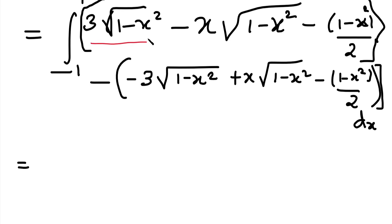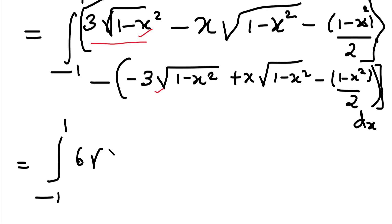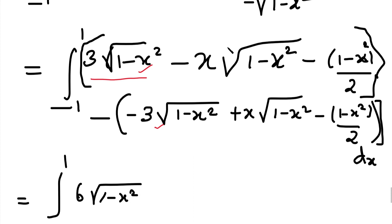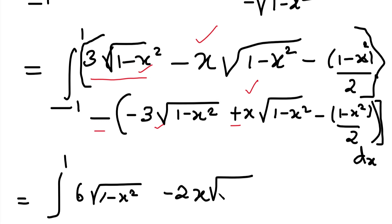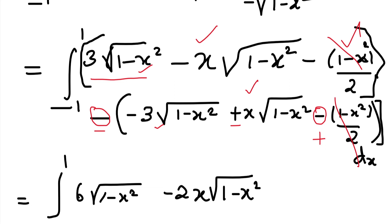After applying both upper and lower limits and simplifying: 3 into root of 1 minus x² appears twice (with a minus outside and minus inside), so we get 6 times root of 1 minus x². For the middle term, minus x times root of 1 minus x² appears twice, giving minus 2x times root of 1 minus x². For the last term, minus (1 minus x²)/2 and minus outside gives plus, but these two terms cancel, leaving zero. So the integrand reduces to 6 times root of 1 minus x² minus 2x times root of 1 minus x².